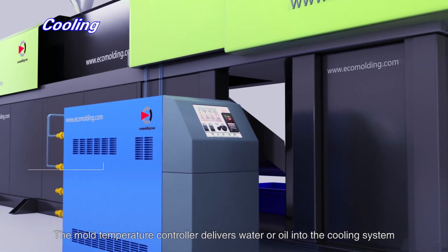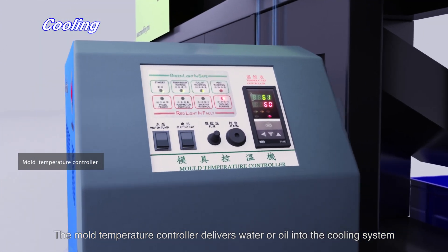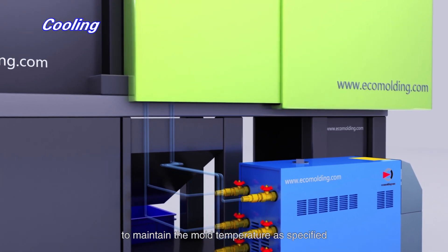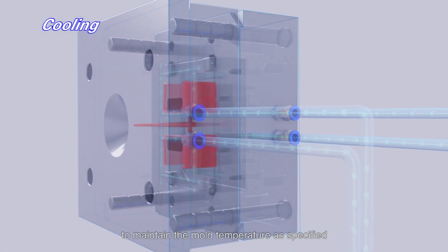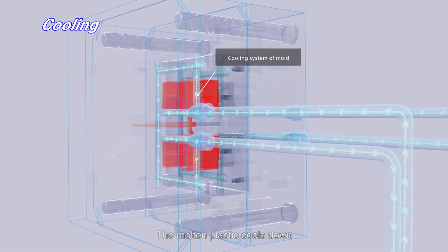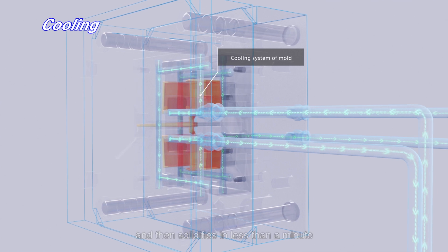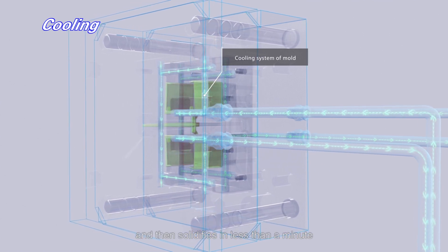The mold temperature controller delivers water or oil into the cooling system to maintain the mold temperature as specified. The molten plastic cools down and then solidifies in less than a minute.